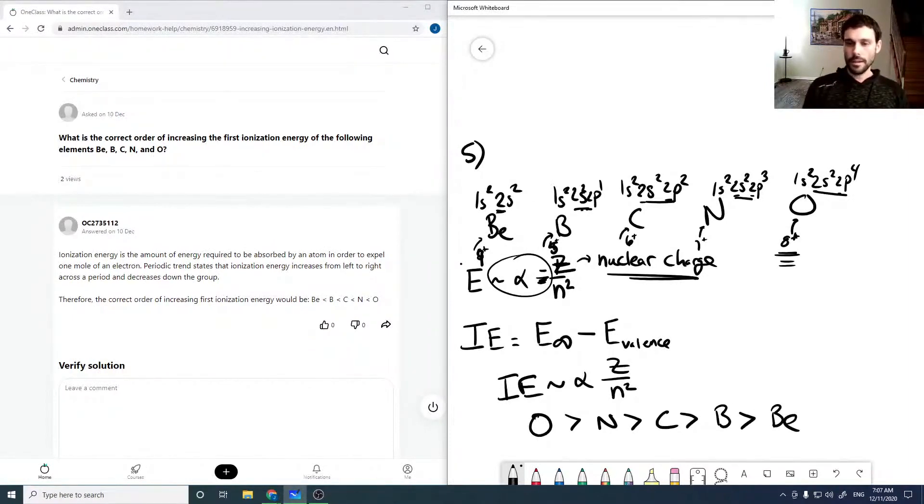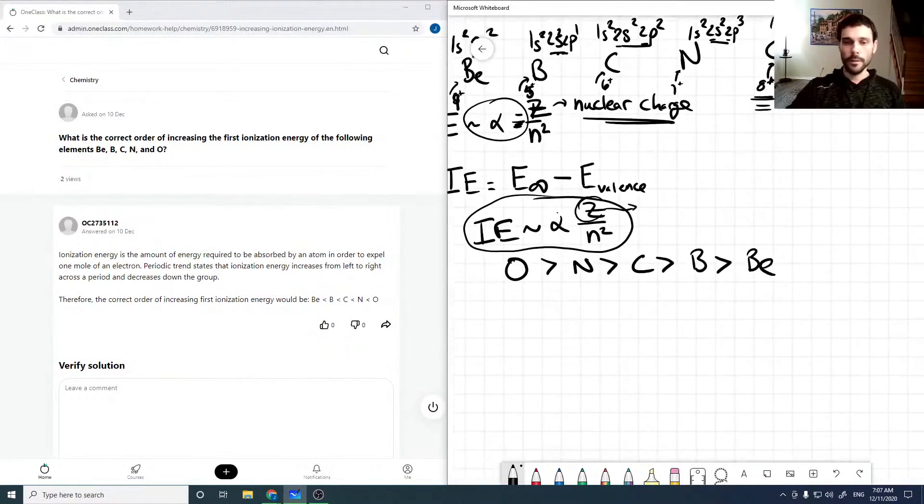I will point out here that this is approximately proportional because there are other factors that are going to come in. As we move down the periodic table especially, we're going to need to worry about shielding. But going across from left to right across the table, this works pretty well.